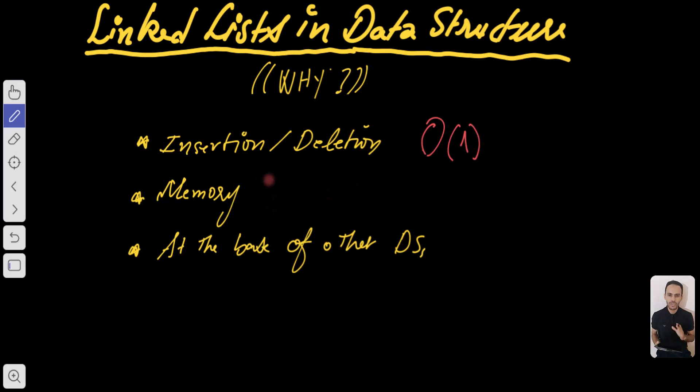The second point concerns memory management. So in contrast to arrays linked lists allow you efficient memory management so there is no wastage or there is no memory wastage.